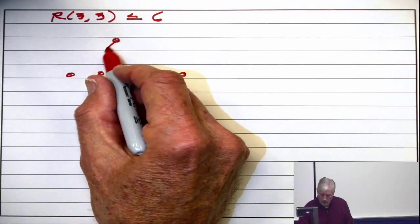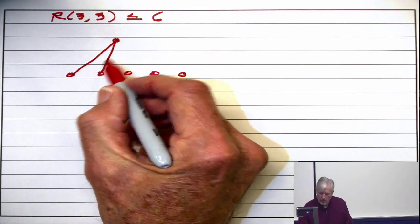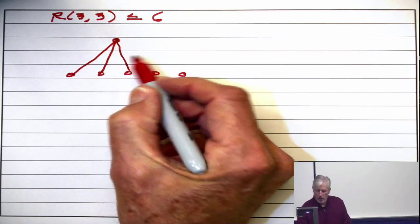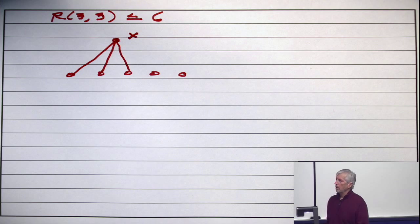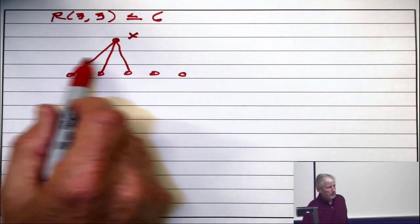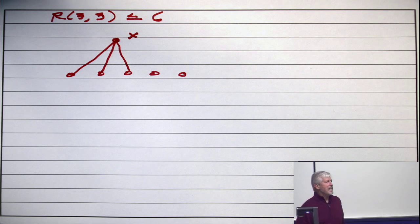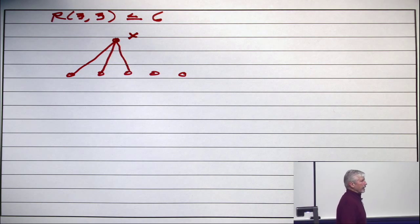Let's take the first case. Suppose 3 of these guys, and it doesn't matter which 3, are adjacent to the first vertex I chose. All right. Now, look at these three. If there's any edge up there, what do I get?